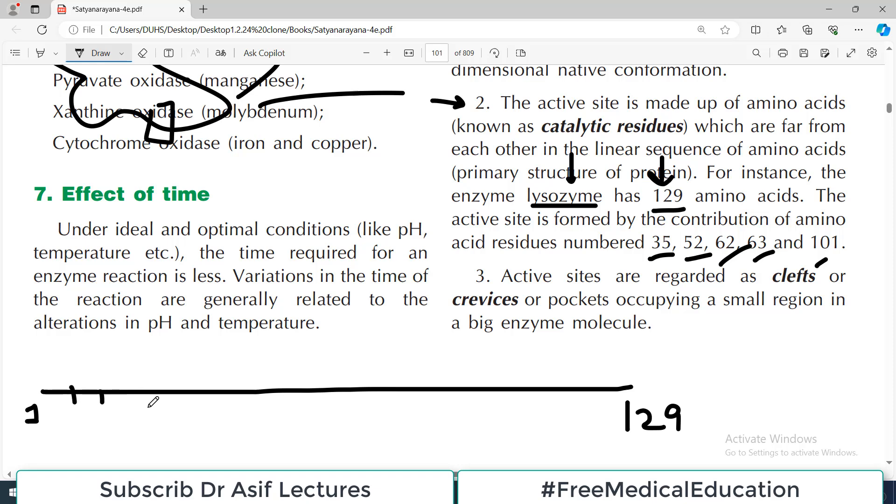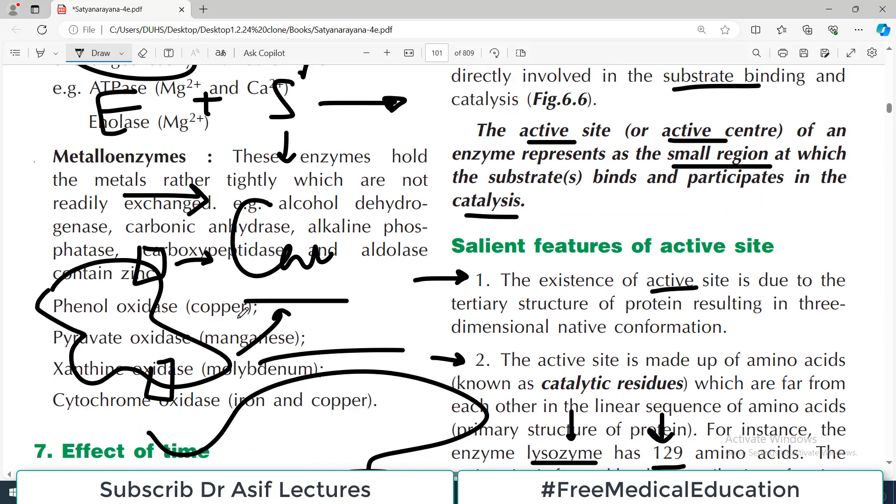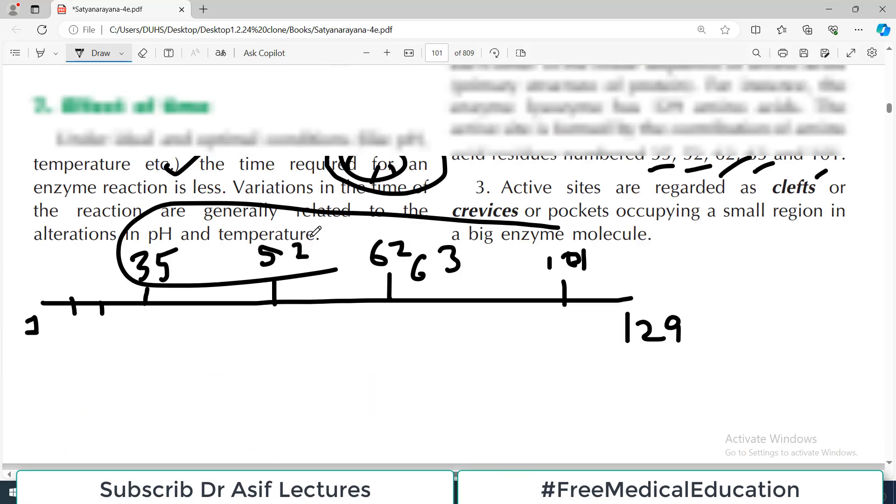If you identify amino acid number 35, then amino acid number 52, then 62, 63, and 101 - in the linear structure these amino acids are far from each other. But what happens in reality is that when the protein folds, there can be an area where these amino acids all come together - amino acid 35, 52, 62, 63, 101 - they all clump together and form the active site. It's the beauty of the tertiary structure of the protein which makes the active site.